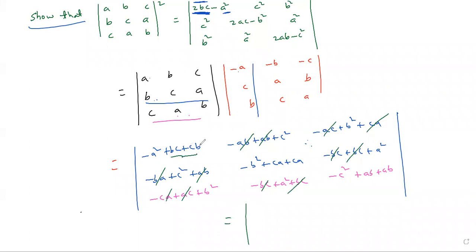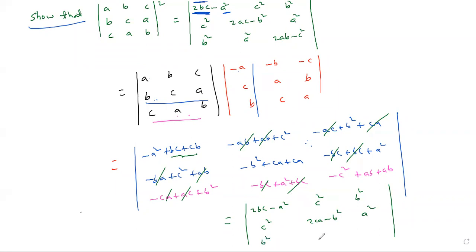Now cancel matching plus/minus terms. Final result: first element = 2bc minus a squared; then b squared, c squared; next c squared, 2ac minus b squared, a squared; then b squared, a squared, 2ab minus c squared. Check this — it is exactly your RHS. The given question RHS: first column (2bc minus a squared, c squared, b squared), second column (c squared, 2ac minus b squared, a squared), third column (b squared, a squared, 2ab minus c squared). This is a very good expected question.